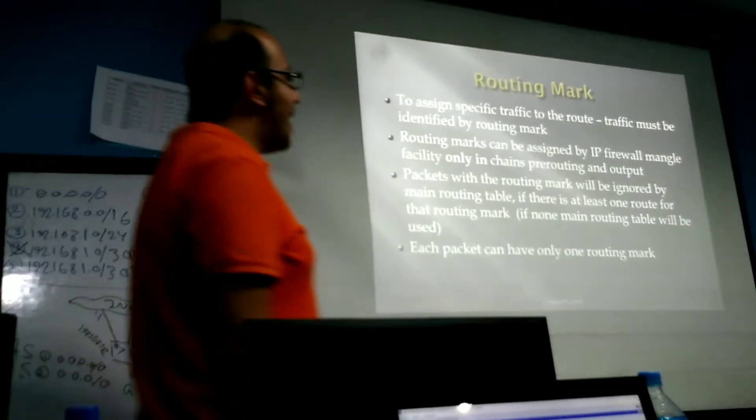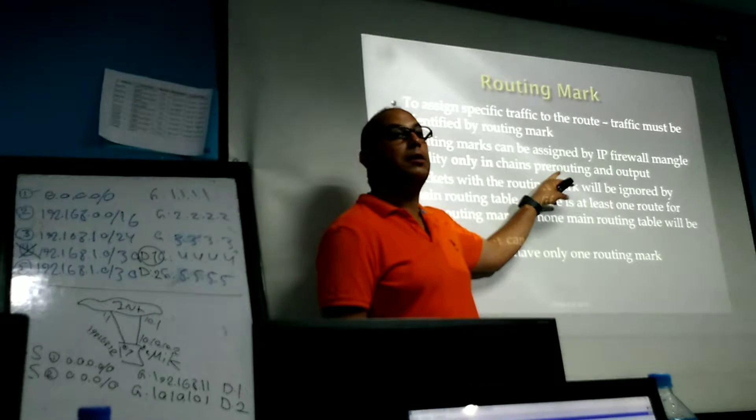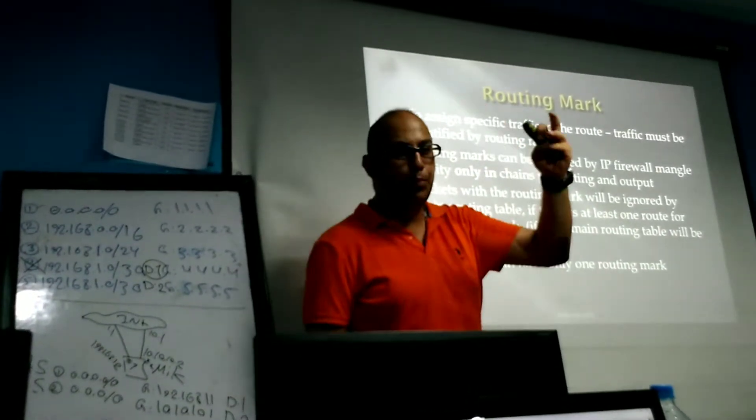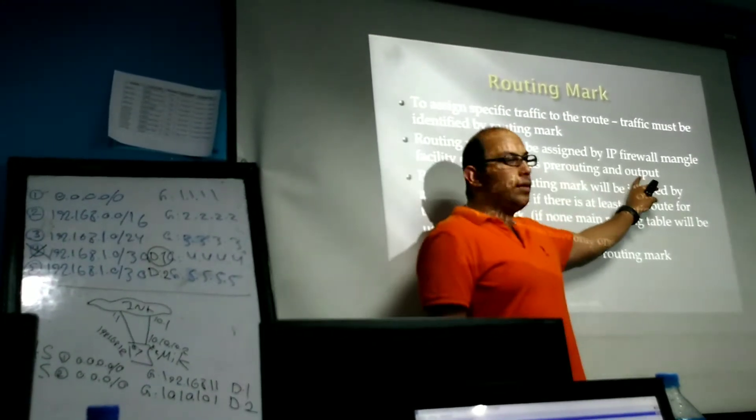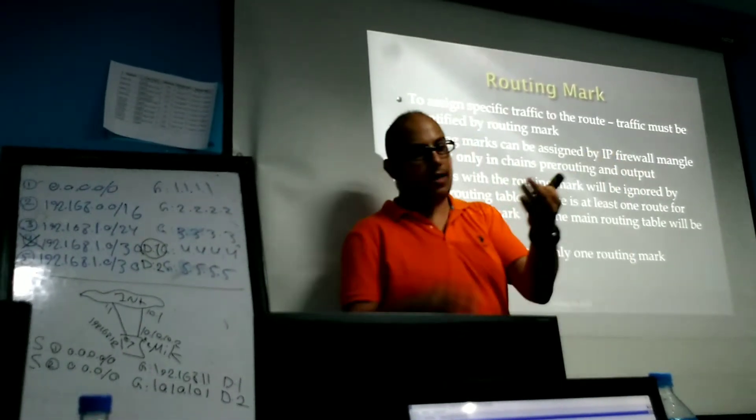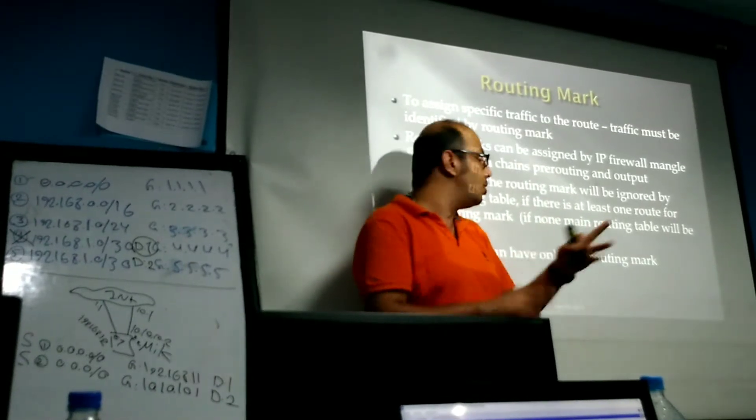Pre-routing includes input and forward, but when you mark in output, it includes only output. So by these two, you can mark either of these ways: forward, input, output. But in pre-routing, forward and input. For output, only output.